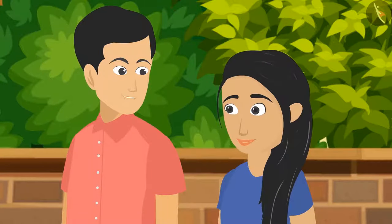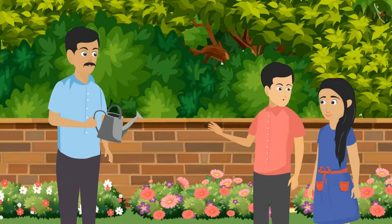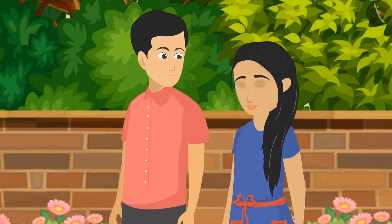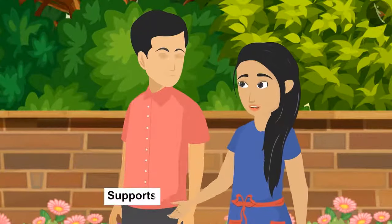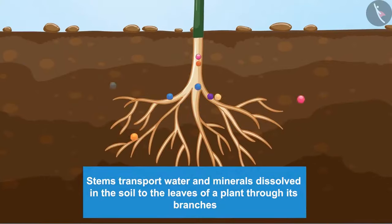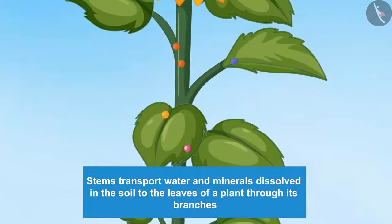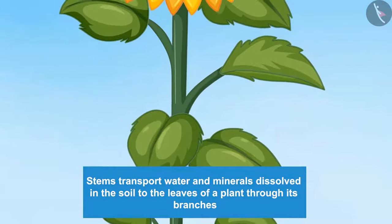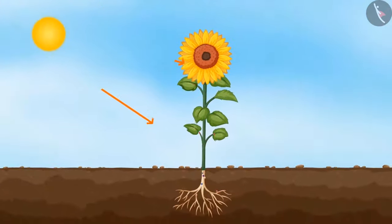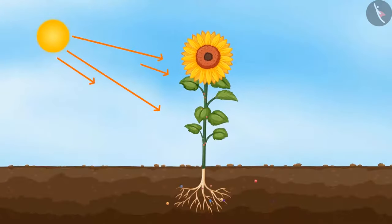Do you remember while discussing the types of plants, we saw that each type of plant has a different type of stem? Yes, the stem is the part of the plant which supports its upper structure. Stems transport water and minerals dissolved in the soil to the leaves through its branches, and also transport the food made in leaves to various parts of the plant.